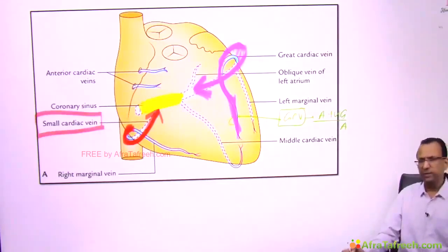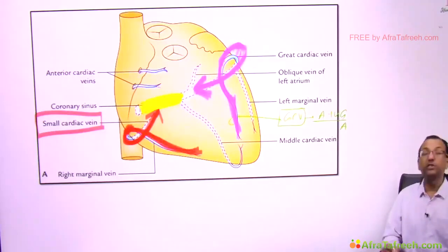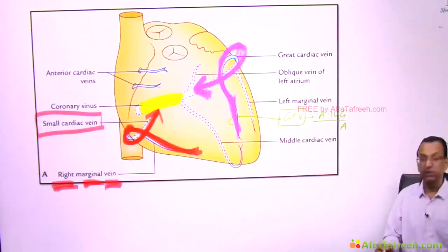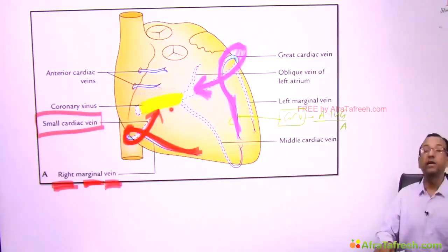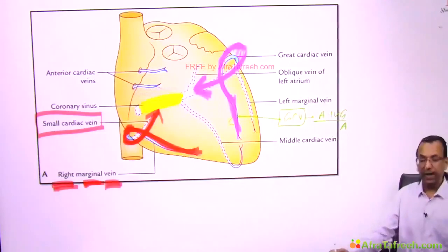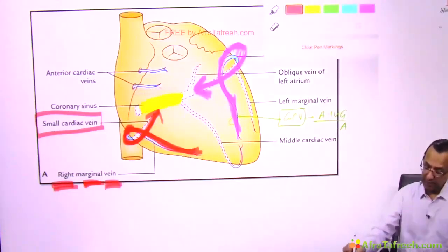The small cardiac vein is a continuation of the right marginal vein. This small cardiac vein drains into the coronary sinus on the posterior aspect of the heart.